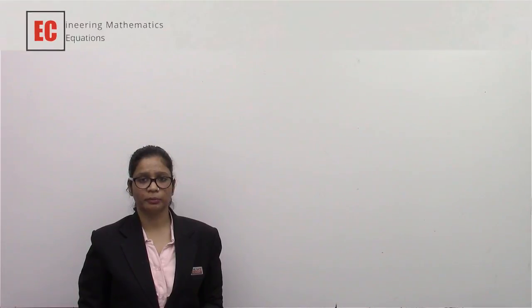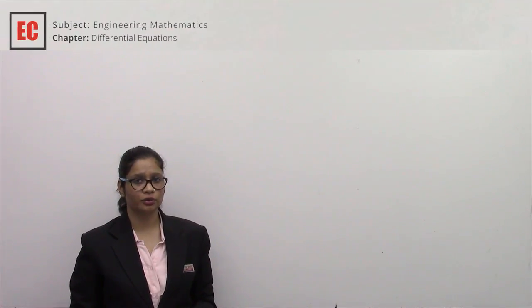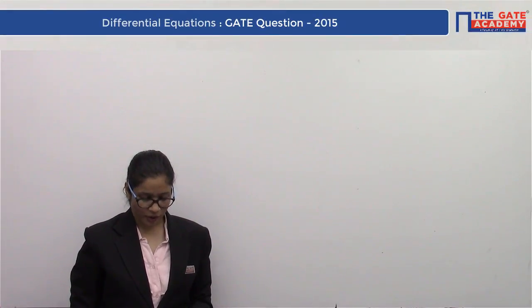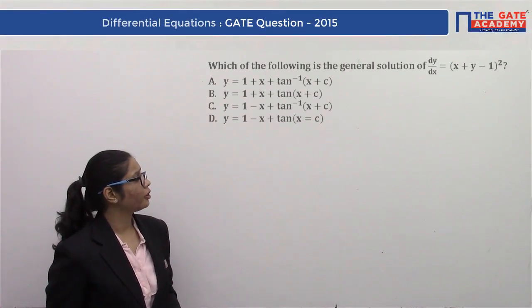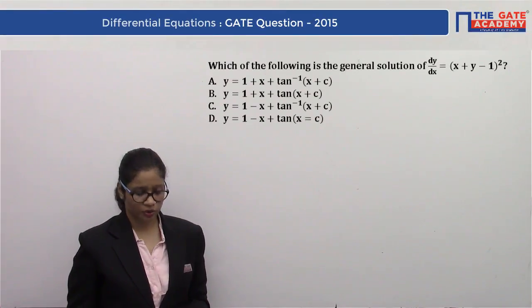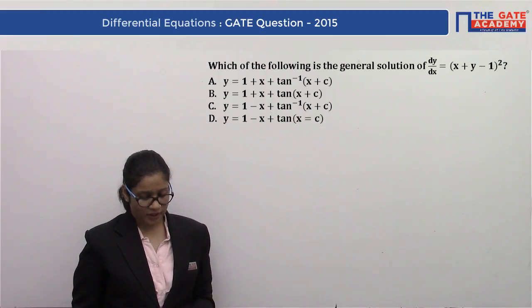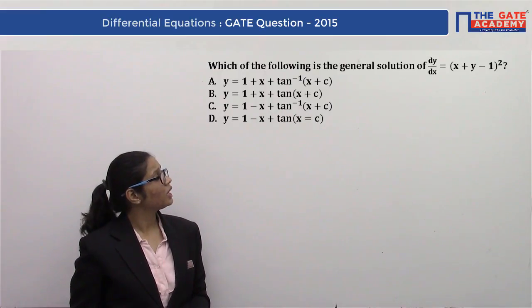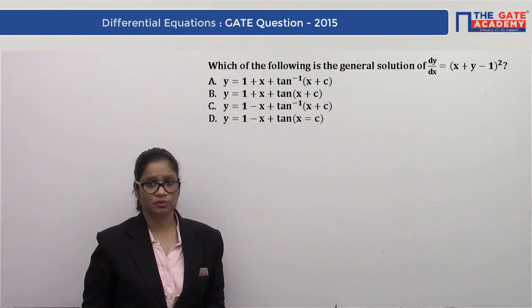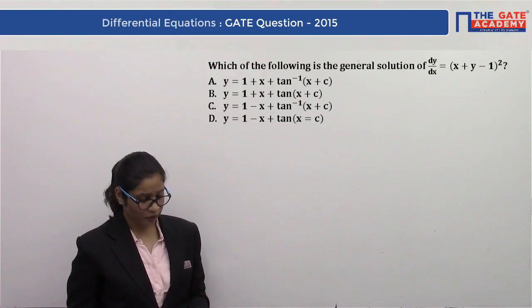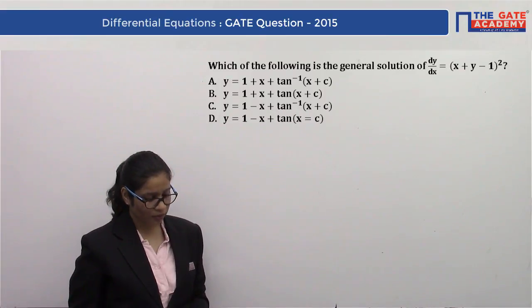Hello students, today we are going to solve an engineering mathematics question which is a previous GATE question asked in 2015 from the paper of Electronics and Communication. The question is displayed on your screen: which one of the following is the general solution of the differential equation dy/dx = (x + y - 1)²?